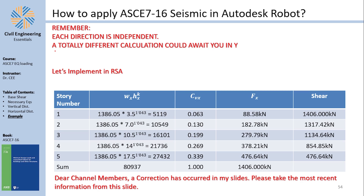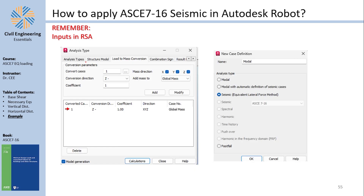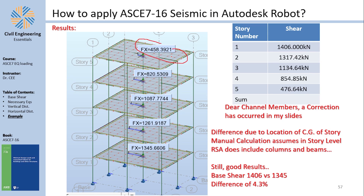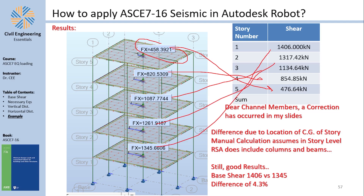Note that each direction is independent — you could have frames in one direction and shear walls in the other, so you must select the correct system for each direction. To implement this in Robot Structural Analysis, you model the structure, then in the analysis type select load-mass conversion, convert dead load case to a mass, then when creating the seismic equivalent load set it to disregard density, include 5% eccentricities per code, and input the parameter values as calculated. The story shears from Robot are very close to the hand-calculated values.